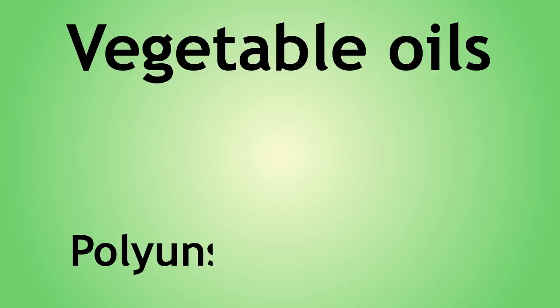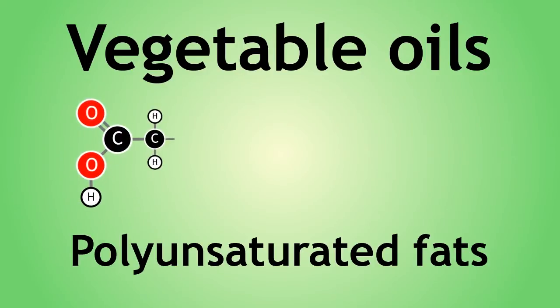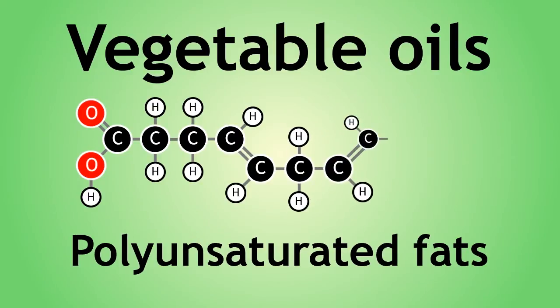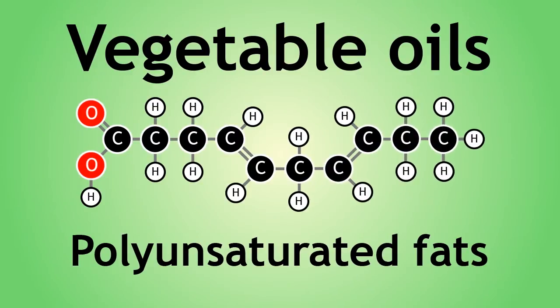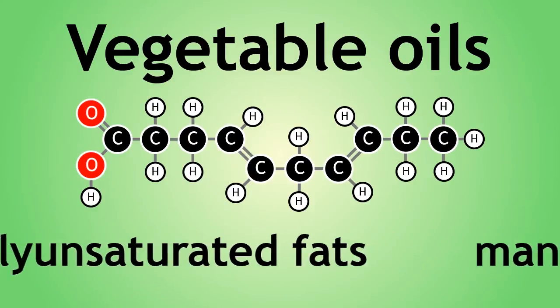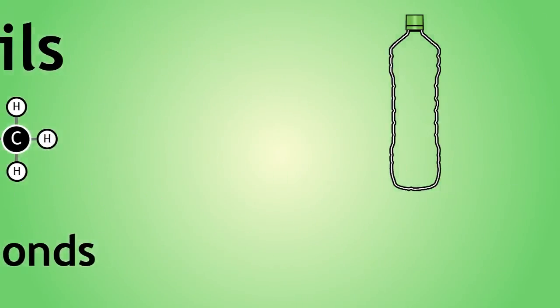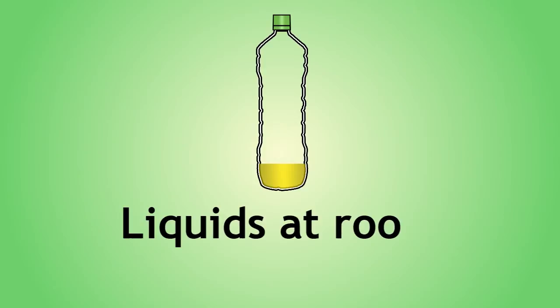Vegetable oils are polyunsaturated fats. You may be familiar with the term unsaturated to describe the presence of carbon-carbon double bonds within a hydrocarbon structure. So a polyunsaturated fat will have many carbon-carbon double bonds within its structure. These fats are normally liquids at room temperature.